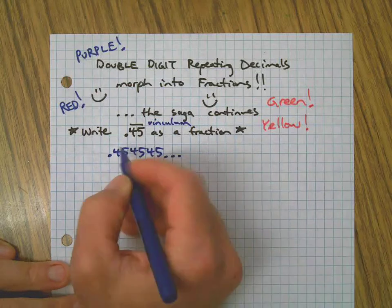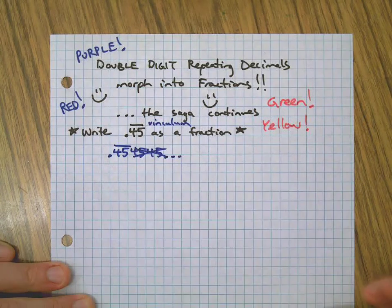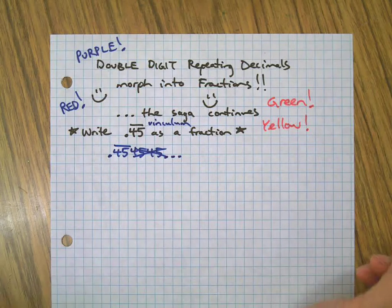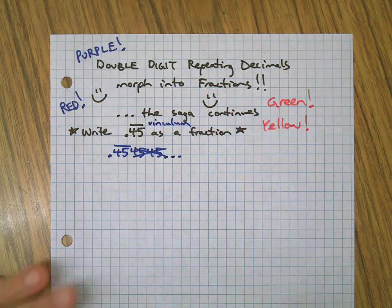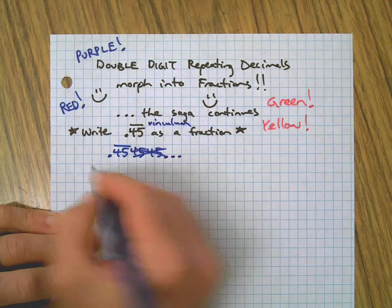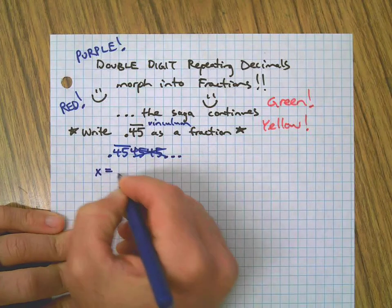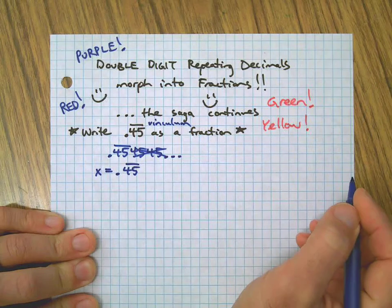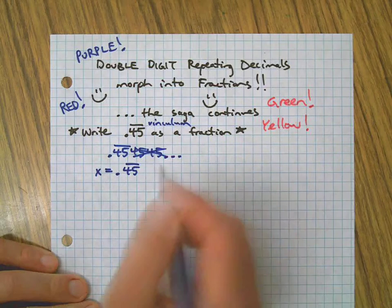So much so that we needed a symbol to be able to summarize that so we don't spend forever writing it. Here's how we're going to solve this one. If you saw the first video this should make a lot of sense. If you didn't, you should go check it out. First of all, we're going to set x equal to this repeating decimal.